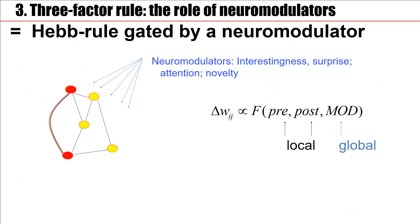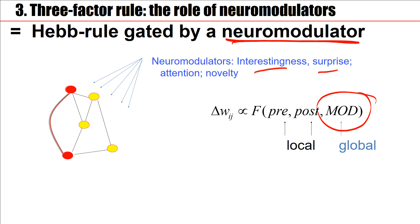The neuromodulator is the new signal. The neuromodulator can signal success in the sense of reward minus expected reward. It could also signal interestingness, surprise, attention, or novelty. Whatever its specific role, we need it as a third factor to implement the weight change.